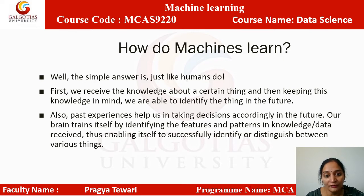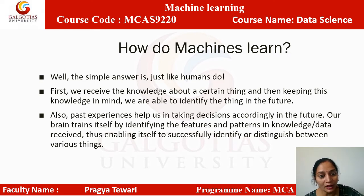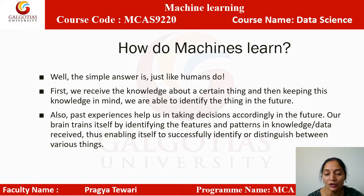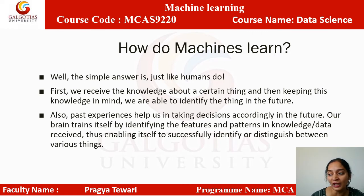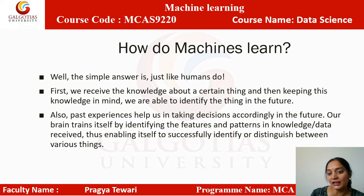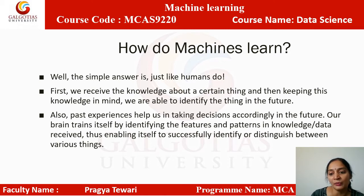So how do machines learn? The simple answer is: just like humans do. First we receive knowledge, then we keep that knowledge in our mind and are able to identify things in the future based on it. Suppose you see a flower many times — the next time you see it, you will recognize it from the knowledge you have gained. Past experience also helps us make future decisions. Our brain trains itself by identifying features and patterns in data, enabling itself to successfully identify or distinguish between various things.